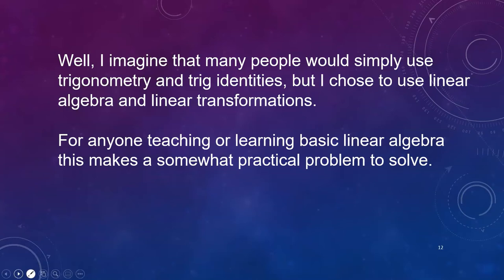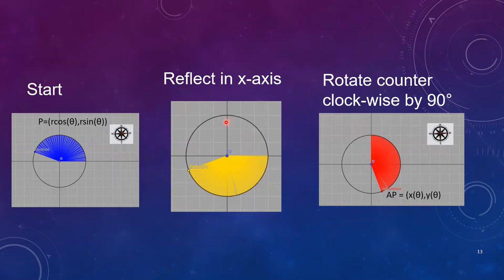So what I did was I started with what we're calling the usual angle and I first reflected it in the x-axis as you can see we do here so everything just flips down, and then you can see by inspection that in order to get to the azimuth we're going to rotate in a counterclockwise direction by 90 degrees.